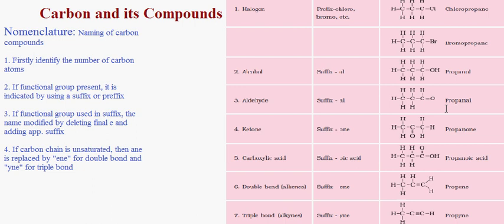Rule 4: If the carbon chain is unsaturated, then '-an-' is replaced by '-en-' for a double bond and '-yn-' for a triple bond. For example, if we have propane and a double bond is present, we replace '-an-' with '-en-' and get propene. Similarly we get propyne.